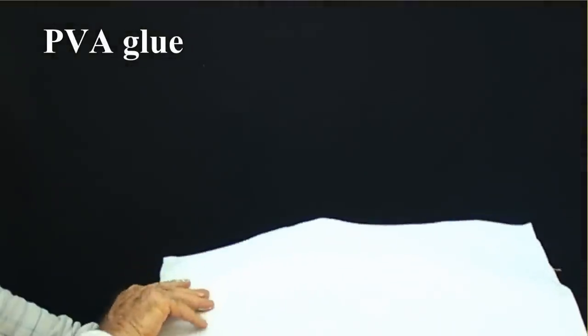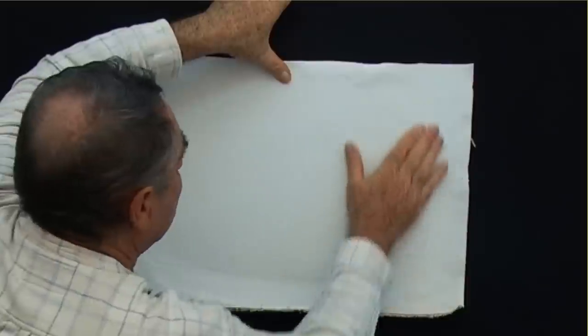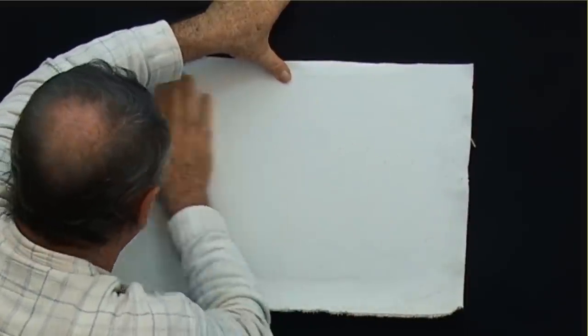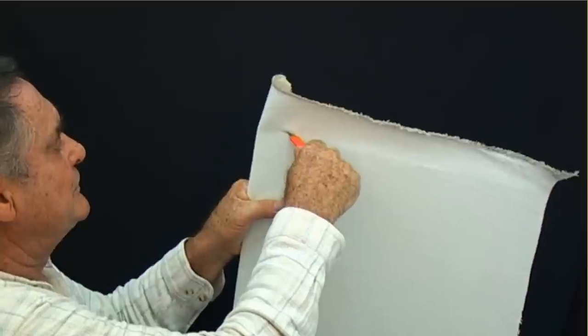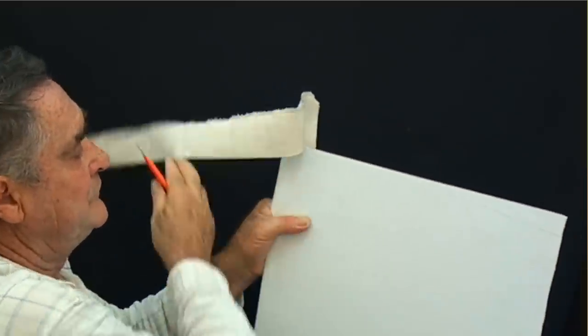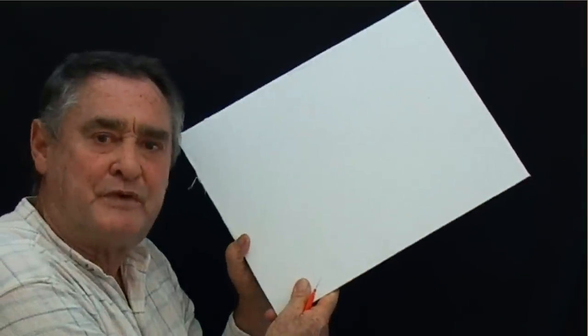And simply place the canvas on top and spread it out with your hand, flatten it with your hand. And when it's dry you can trim it up with a knife. So there's your art board ready to paint on.